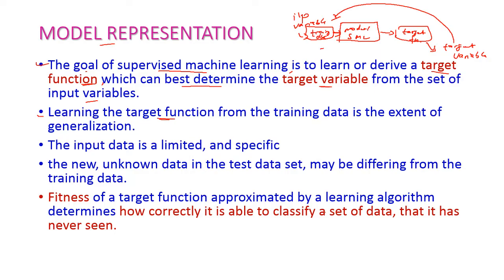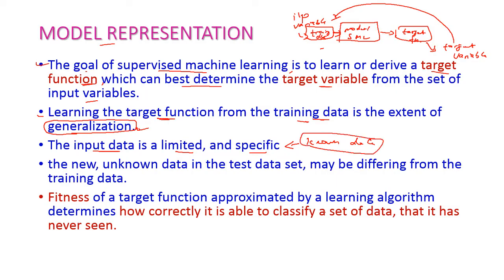Learning the target function from the training data is the extent of generalization, which we have already seen in our previous class. The input data is limited and specific — it is the known data, because the model is trained using only this input data. The new unknown data is the test data, and all test data are unknown to our model and may be different from the training data.